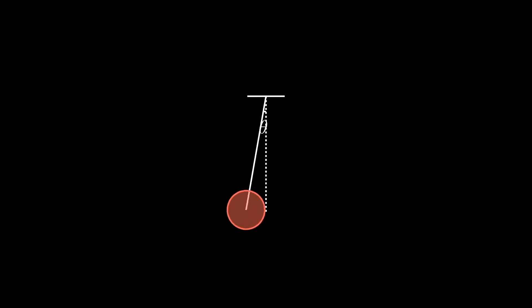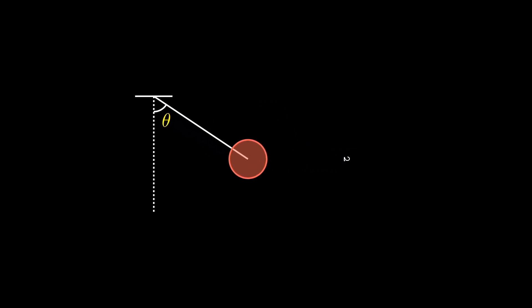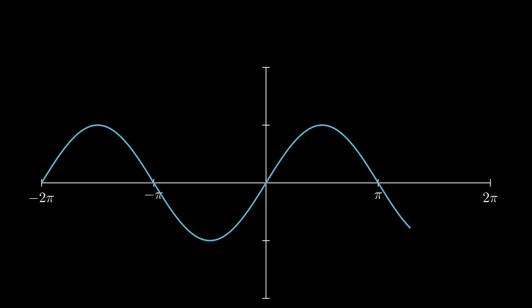This derivation relies on an approximation of sine that makes calculations much easier. Because the angle of the swinging pendulum is small enough, it is typical to see the approximation of sine theta as theta. This is actually a Taylor polynomial approximation of the function sine theta.